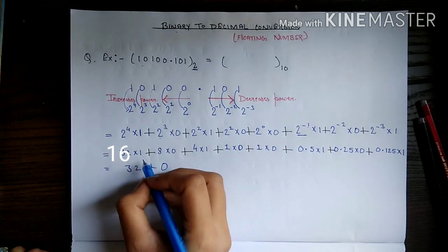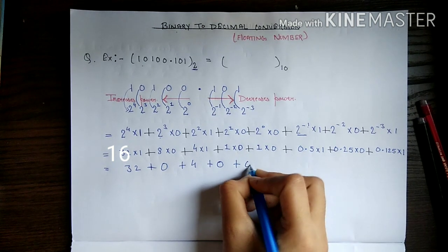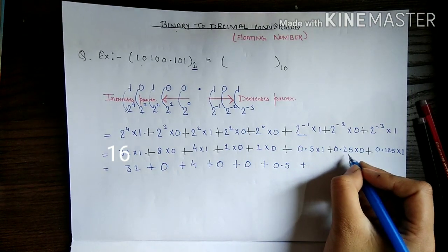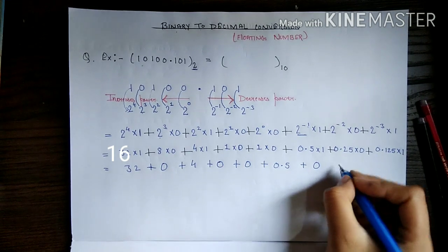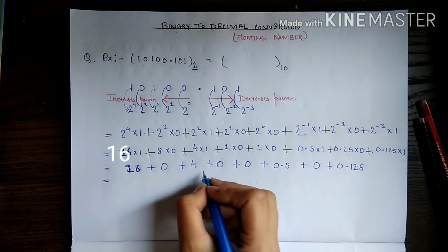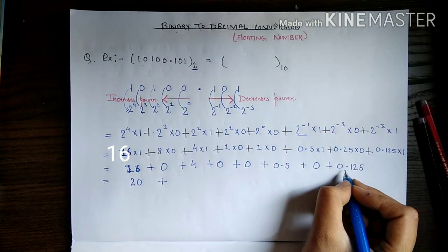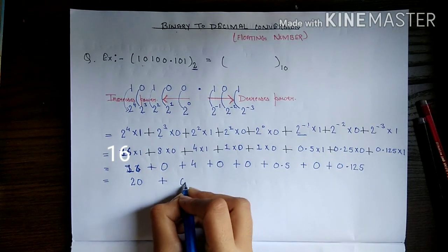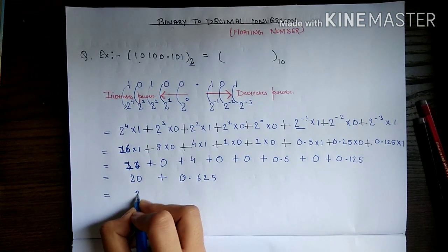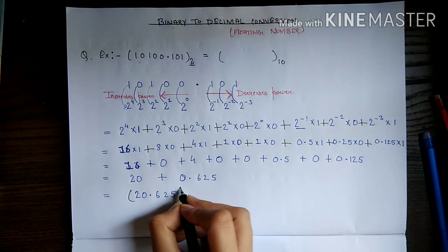Now calculate: 32 into 1 is 32, any number into 0 is 0, 4 into 1 is 4, 0.5 into 1 is 0.5, and 0.125 into 1 is 0.125. Adding: 32 plus 4 is 36 — wait, 16 plus 4 is 20, plus 0.5 plus 0.125 is 0.625, giving us 20.625, which is our required answer in base 10.